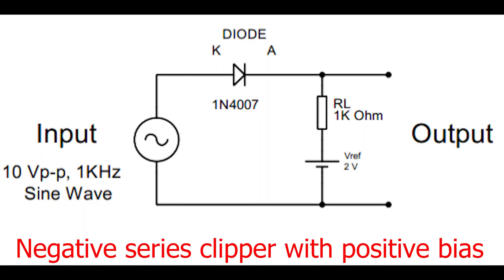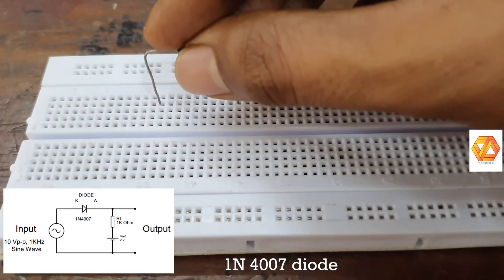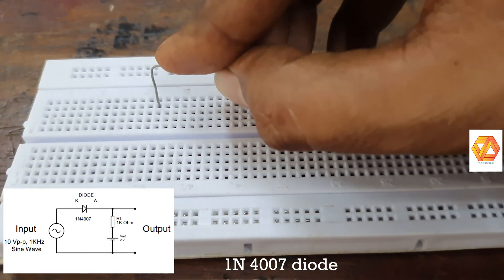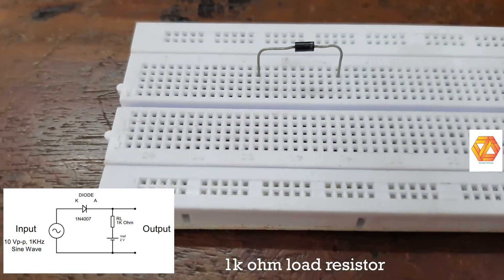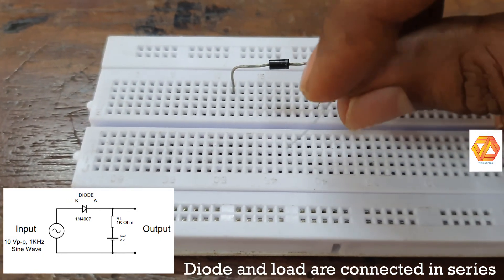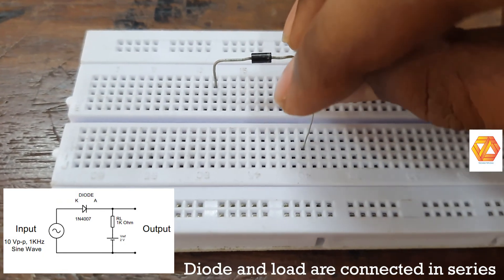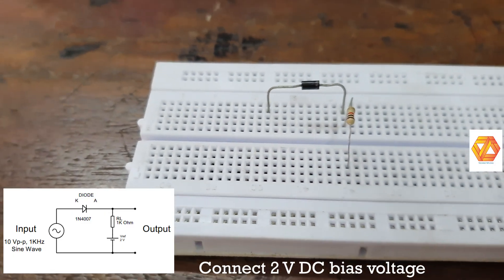Negative series clipper with positive bias. Here we are connecting 1N007 diode in series with 1 kilo ohm load resistor. That's why the name series clipper. Here diode and load resistor both are connected in series and then we are connecting a 2 volt DC bias.